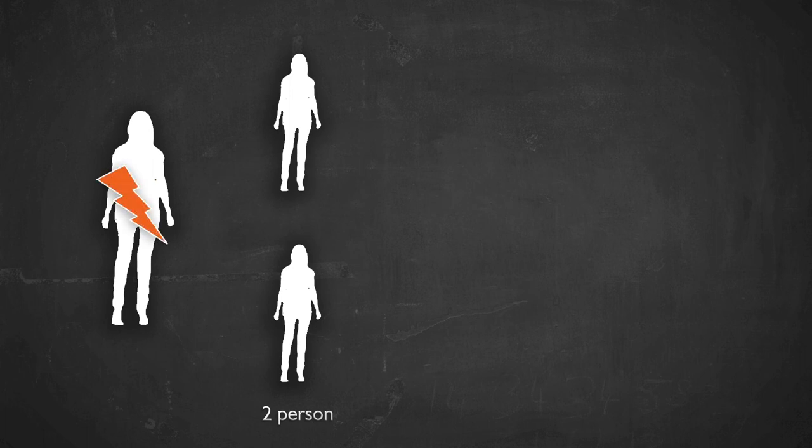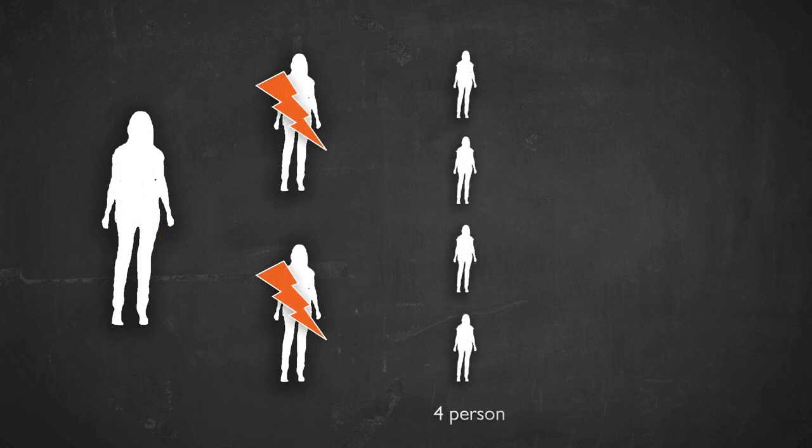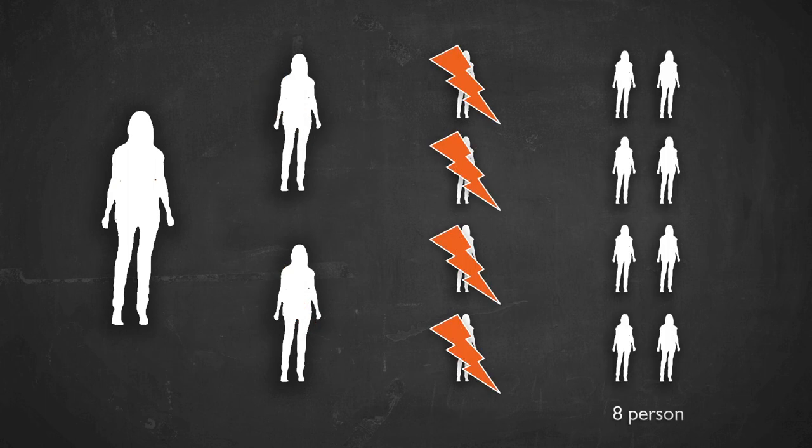Those two people divide, making four people. The original two people die. The four people divide, giving eight people. In the next generation, you have 16 people, then 32 people, and there's just proliferation of people.